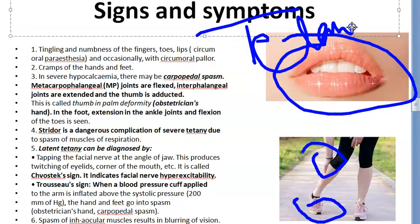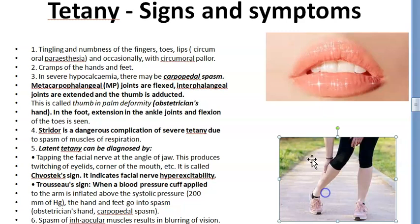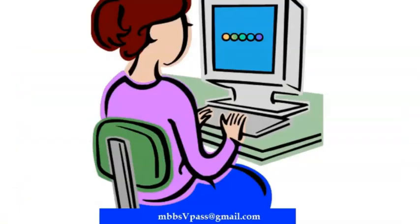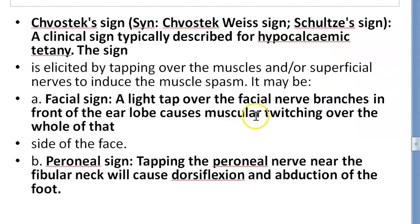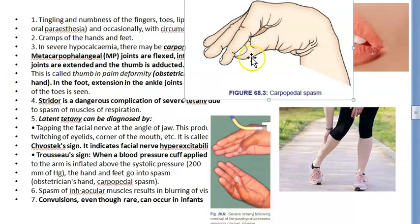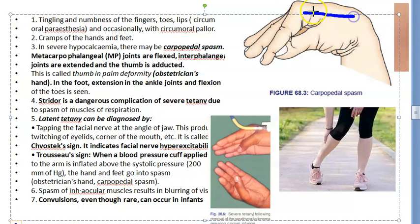There can also be cramps in the hands and feet. Carpopedal spasm is a classic sign: the metacarpophalangeal (MP) joints are flexed, the interphalangeal joints are extended, and the thumb is adducted — this is called the obstetrician's hand.